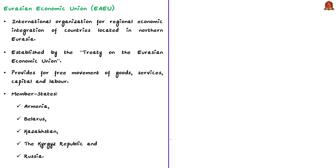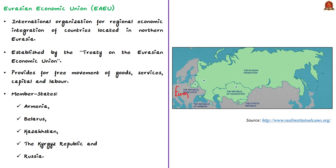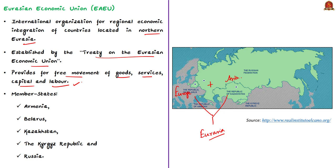The Eurasian Economic Union (EAEU) is an international organization for regional economic integration of countries located in the northern Eurasian region. It was established by the Treaty on the Eurasian Economic Union. The EAEU provides for free movement of goods, services, capital, and labor, and pursues coordinated, harmonized, and single policy in sectors determined by the treaty and international agreements within the union.